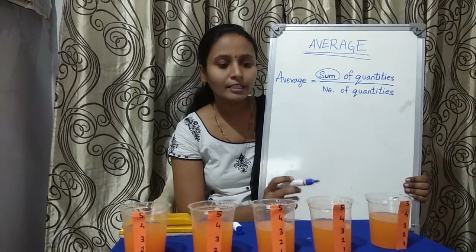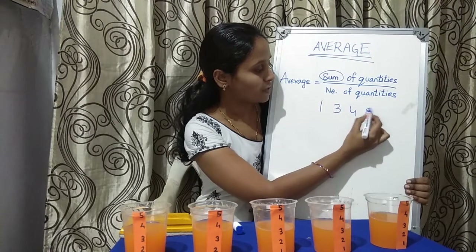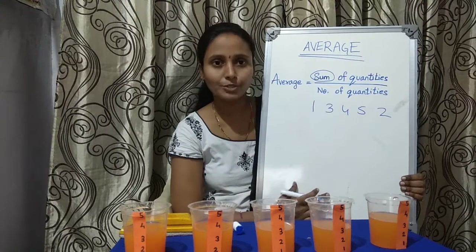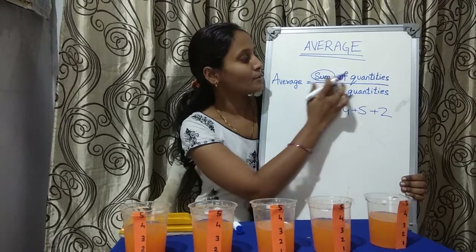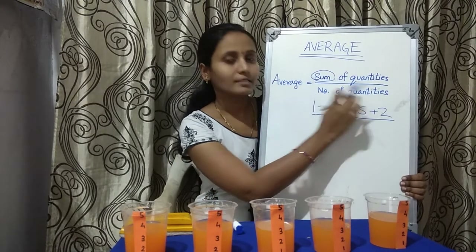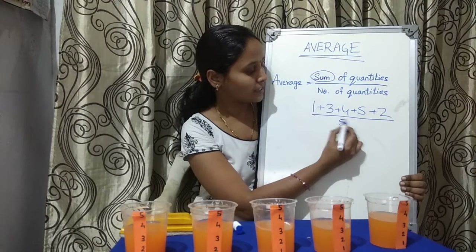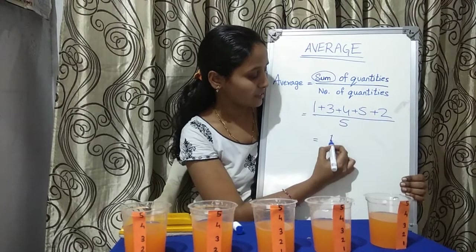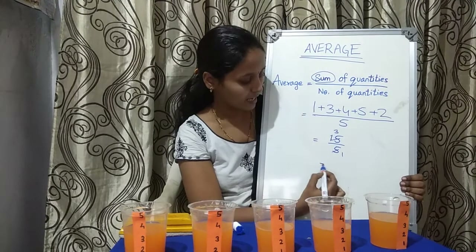Initially the glasses were having 1 unit, 3, 4, 5, and 2 units of juice. So we have to add all these, because the formula says sum of quantities. That means we add: 1 plus 3 plus 4 plus 5 plus 2. Divided by the number of quantities — there are 5 quantities. So the sum is 15 divided by 5, which gives us an average of 3.